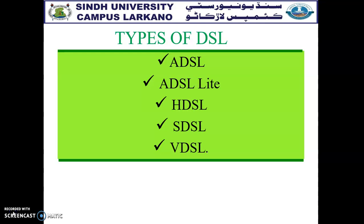VDSL means Very High Bit Rate Digital Subscriber Line. It is another advanced DSL approach that uses coaxial cable and fiber optic cable, but it is used only for short distances. It uses a technique called DMT for modulating and demodulating, and it has a downstream data rate of 50 to 55 Mbps and an upstream data rate of 1.1 to 2.5 Mbps.